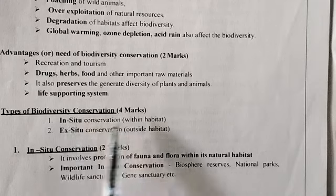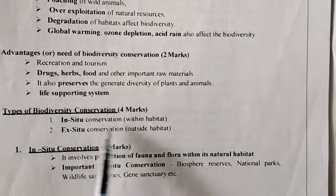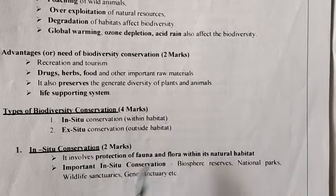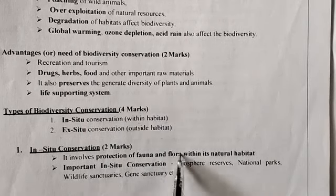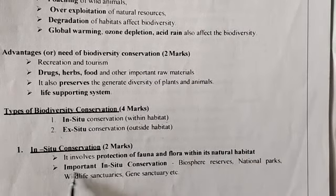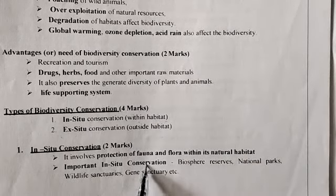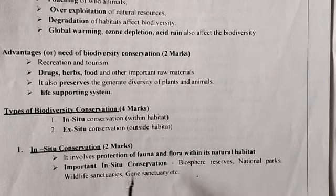Types of biodiversity conservation: we have in-situ and ex-situ. In-situ means within the habitat; ex-situ means outside the habitat. In-situ involves protection of fauna and flora within the natural habitat. Important in-situ conservation areas are biosphere reserves, national parks, wildlife sanctuaries, and gene sanctuaries.